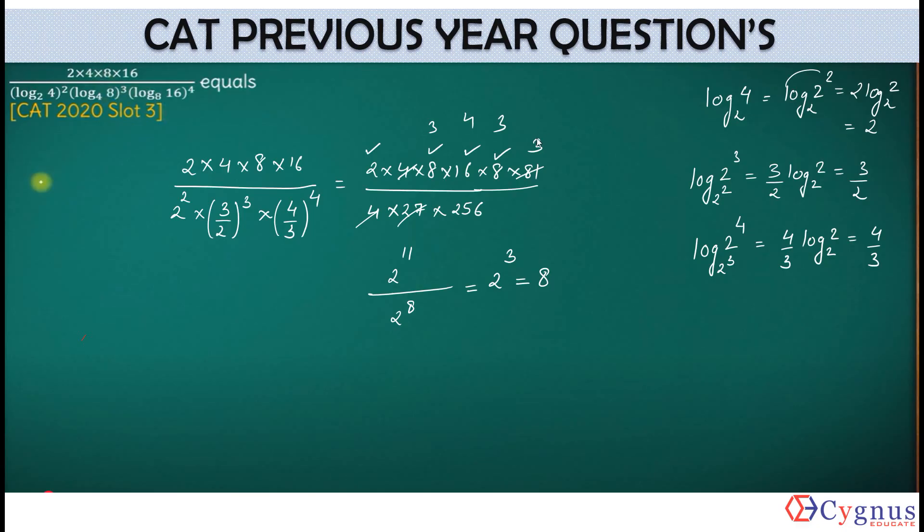And if you look at this 3 also, I've got this 3 also. So my answer becomes 8 into 3. How much? 24. So the final answer is 24.